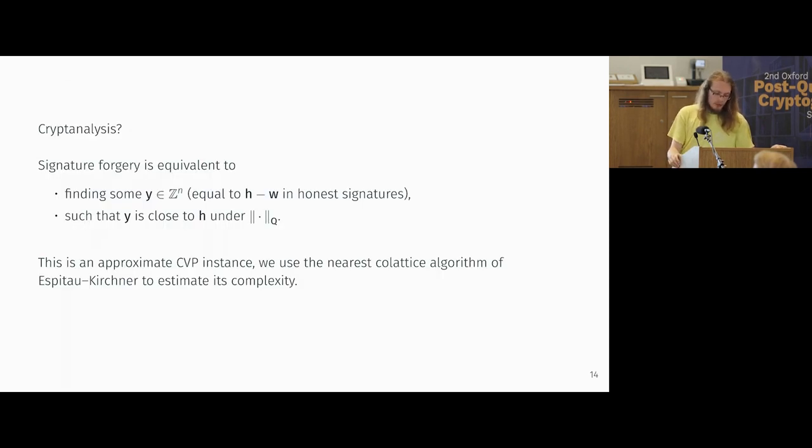For signature forgery, it's equivalent to finding some integer vector, which would have been h minus w in the honest signatures, that's close to h under this norm Q. And if you jump through all of the hoops and return this to a lattice problem, it's exactly an approximate CVP instance. And we estimate the complexity of this in the same way that Falcon do, which is implicitly using the nearest co-lattice algorithm of Esplito and Kirchner. And then both of these give us block sizes, and then there's a standard pipeline of applying the dimensions for free technique and arguing about how one converts a block size into a number of gates and then arguing that you satisfy the number of gates. And we have a fair amount of headway.